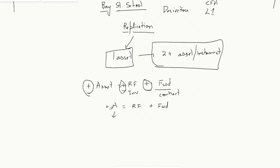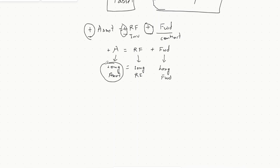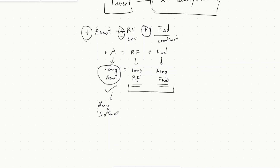A positive sign means long asset. So a long asset equals a long risk-free plus a long forward. The left-hand side equals the right-hand side, which means if you're long an asset, you can replicate that position with a combination of longing a risk-free investment and longing a forward contract. Long asset simply means buying the asset; short means selling the asset. A positive sign is buying; a negative sign is selling or shorting.